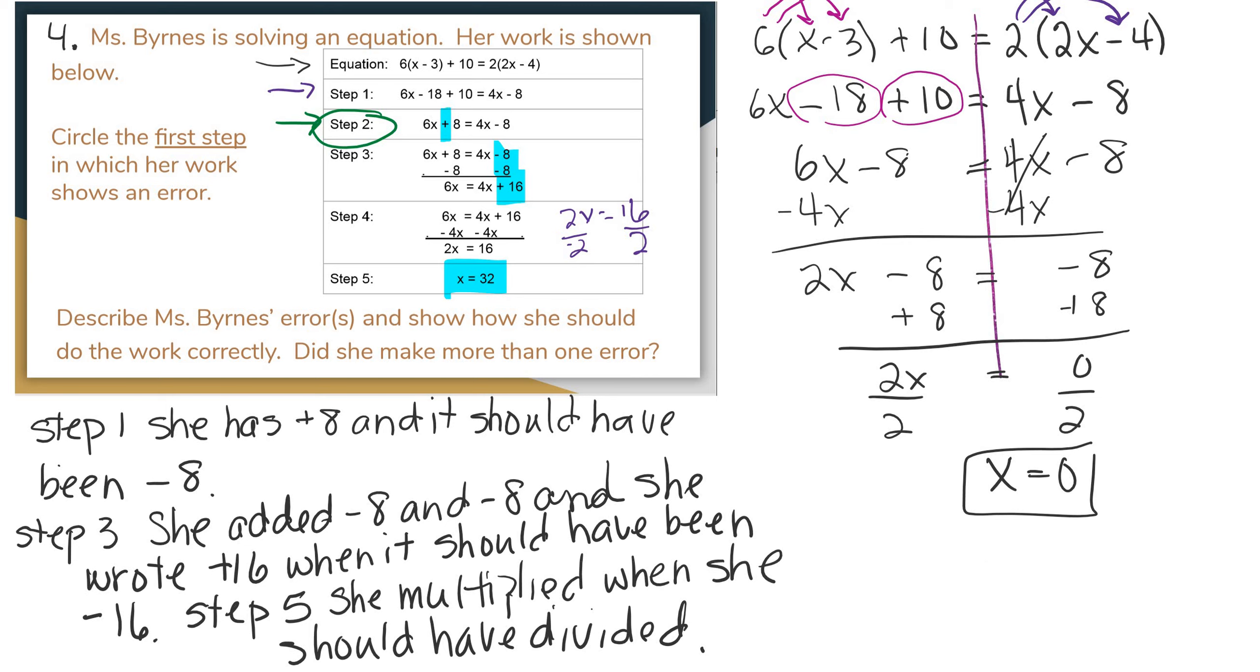Okay, so we came up with our own answer. We circled the first step in which she showed an error, and then we described all the errors. So that's it for number 4.